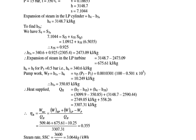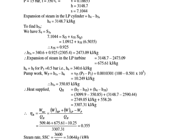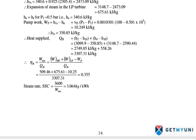H6 = HF at P = 0.5 bar = 340.6 kJ per kg. Pump work W_pump = H1S minus H6 = VF5 × (P3 minus P1), which gives 10.249 kJ per kg, and H1 = 350.85 kJ per kg.